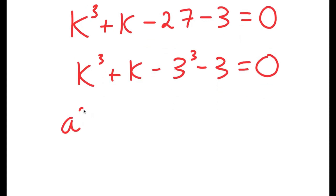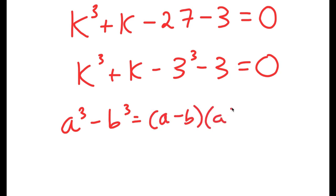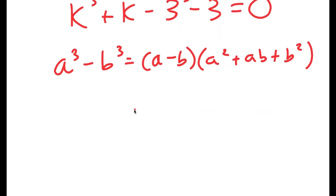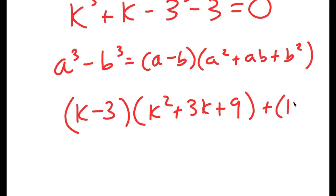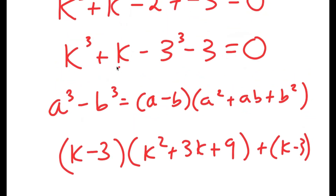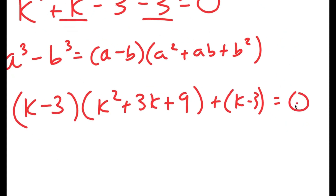Now, if I have something in the form a to the power of 3 minus b to the power of 3, this is equal to a minus b times a squared plus ab plus b squared. So this is equal to k minus 3 times k squared plus 3k plus 3 squared, which is 9. And we can't forget our plus k minus 3 at the end, which is this part right here. And this is equal to 0.